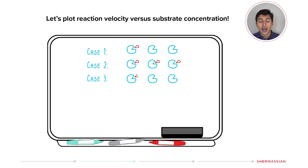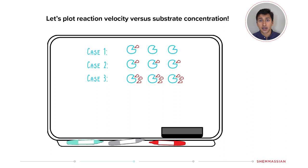Let's measure the rate of product formation. As we add more substrate, the rate of product formation will increase. At a certain point, though, we have so much substrate that the enzymes are working as fast as they possibly can. To represent this graphically, we can plot the reaction velocity — or how fast we're making our product — versus the concentration of substrate.